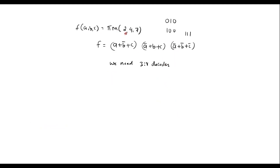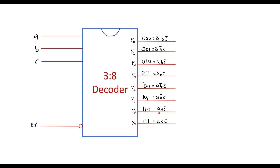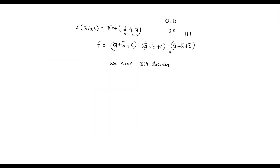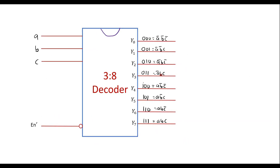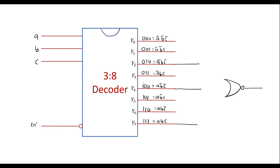According to the function, we have maxterms 2, 4, and 7. The outputs of the decoder are product terms, but the equation requires sum terms, which is a standard POS form. To convert product terms into sum terms, we use a NOR gate. Outputs Y2, Y4, and Y7 are connected to a NOR gate to produce output F.